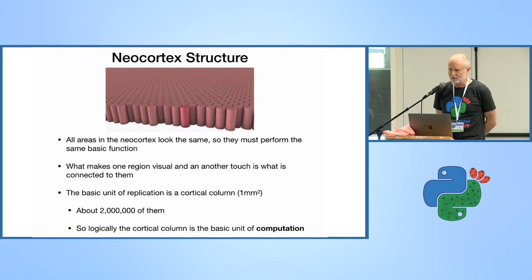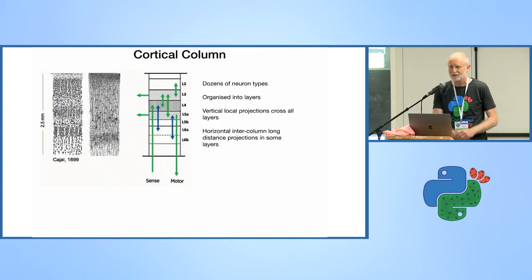A really incredible thing that's been discovered about the neocortex is that it is uniform. It doesn't matter where you look in it, it looks the same. The visual cortex looks the same, the auditory system looks the same, the areas that deal with touch look the same. What distinguishes one region from the other is what they're connected to. So visual cortex is connected to your eyes, your auditory cortex is connected to your ears. There is a basic unit of replication called a cortical column. There are about 2 million of them. If the cortical column is the basic replication, it's also the basis of computation. We need to understand the cortical column to understand what goes on in the neocortex.